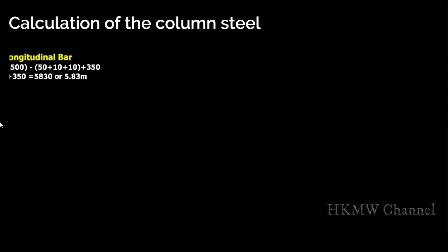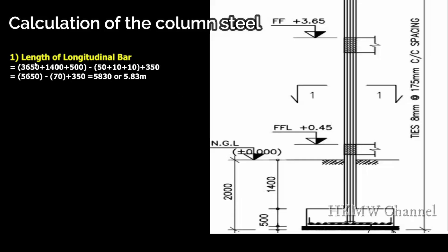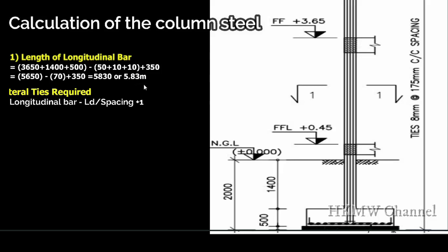Step 1: Calculate the length of the longitudinal bar. The formula is: 3650 (NGL to first floor) + 1400 + 500 (below NGL to footing mat) − 50 (cover thickness) + 10 mm + 10 mm (bottom mat bars along X and Y axes) + 350 mm (development length as given in the drawing). This gives a total of 5830 mm, or 5.83 meters.